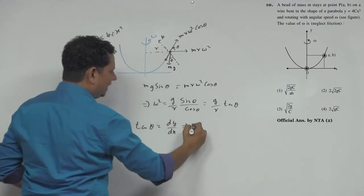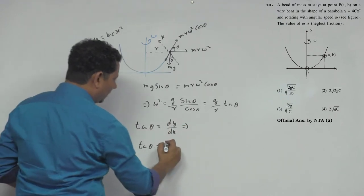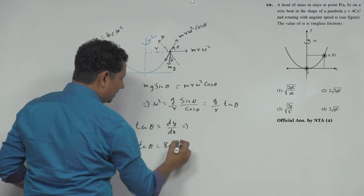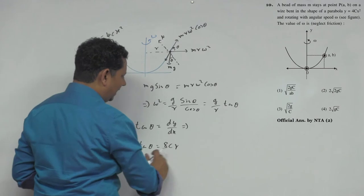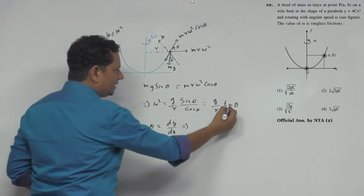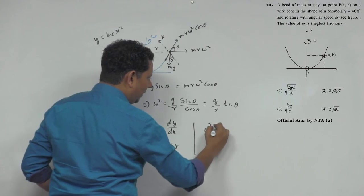When we differentiate this, tan θ will be equal to 8cx. Since we're writing in terms of r, this will be equal to 8cr.